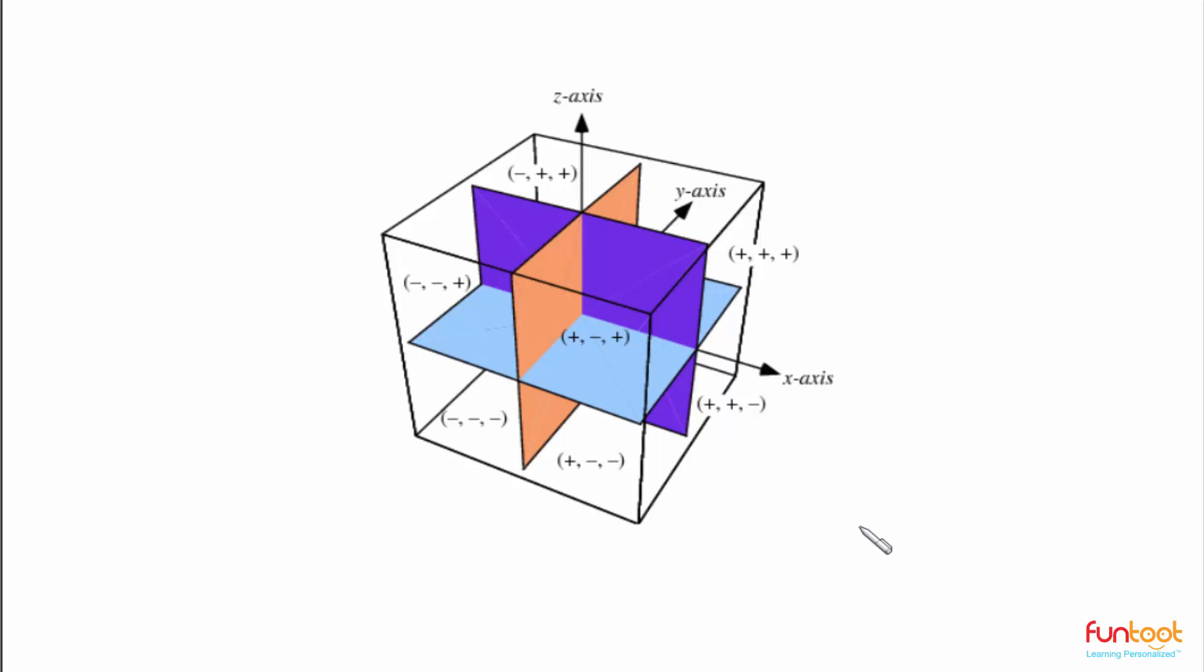Here we can see how 3D space is represented with the help of three mutually perpendicular axes. This is the X axis, this is the Y axis, and this is the Z axis. So there are three coordinate axes here.